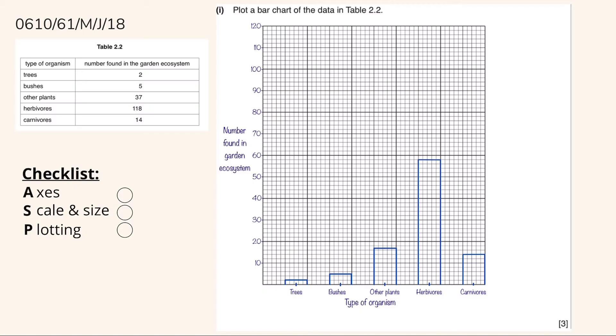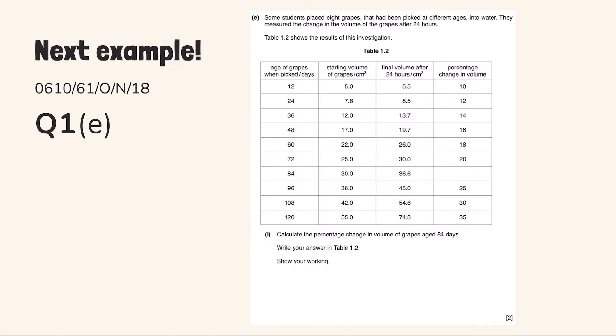Now let's move to the next example. This question comes from Paper 6, 2018, October-November, Variant 1. It says some students placed 8 grapes. They had been picked at different ages into water. They measured the change in volume of the grapes after 24 hours. And Table 2.1 shows the result of this investigation.